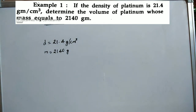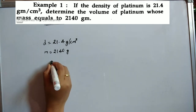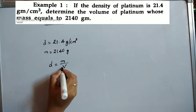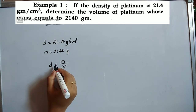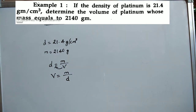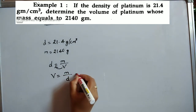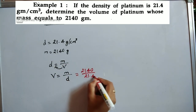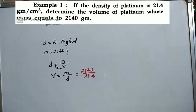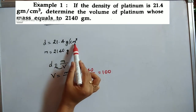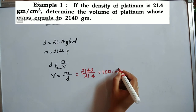Density and mass are given; we have to find the volume. We know the formula: density is mass divided by volume. But we have to find volume, so rearranging, volume equals mass divided by density: V = M/D. Substituting the values, mass is 2140 g and density is 21.4 g/cm³. Simplifying, the answer is 100 cm³.